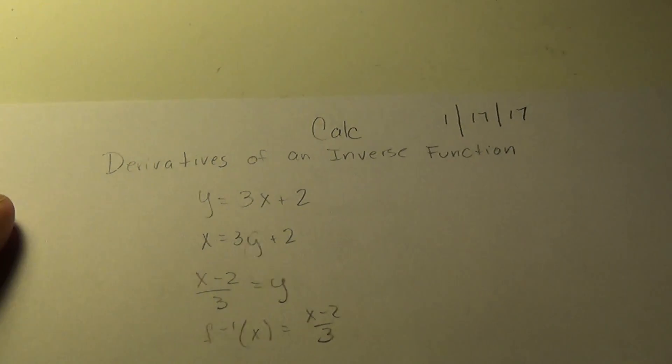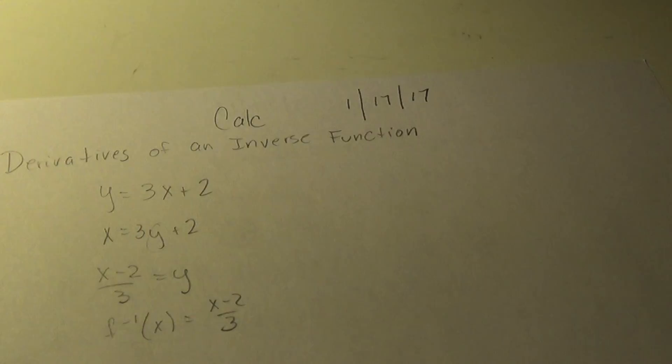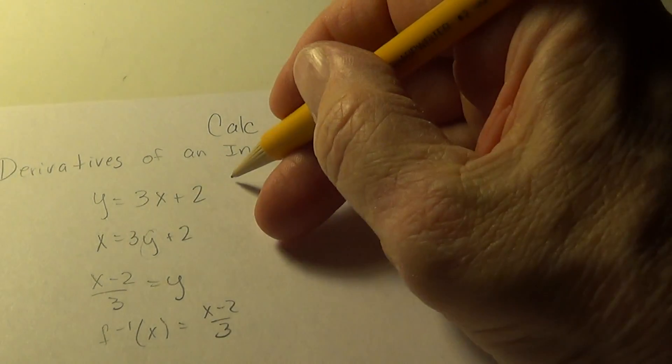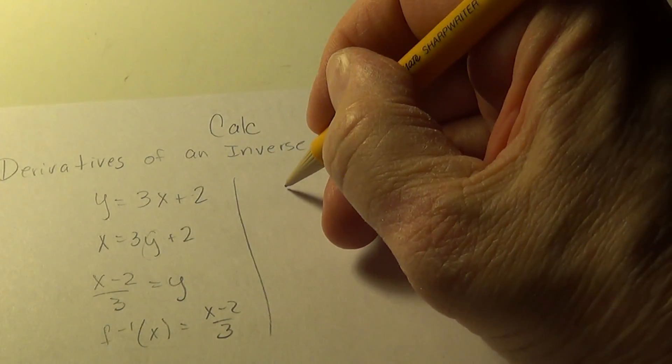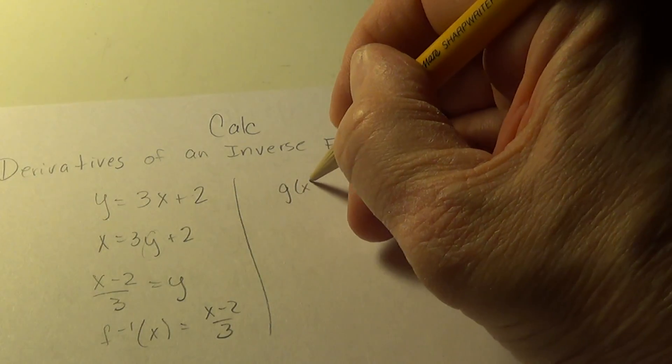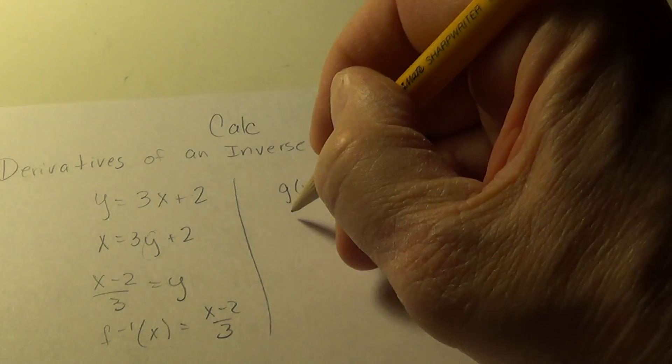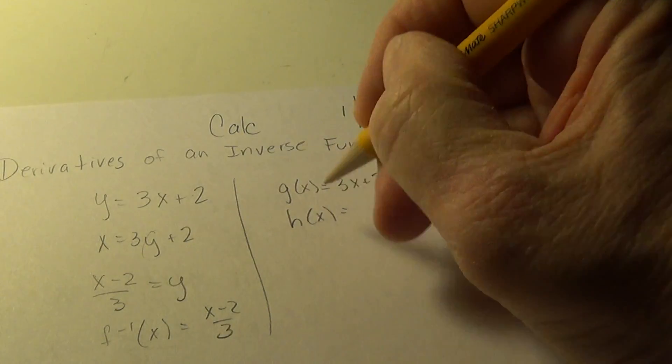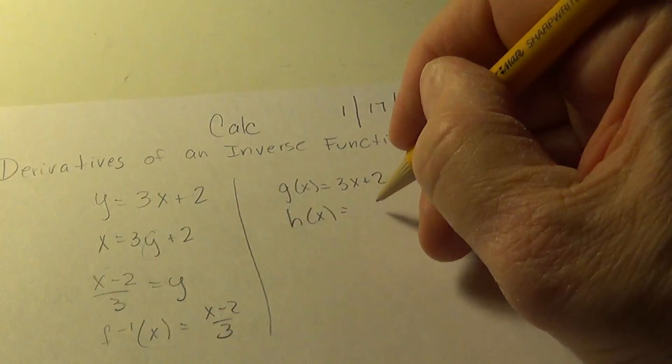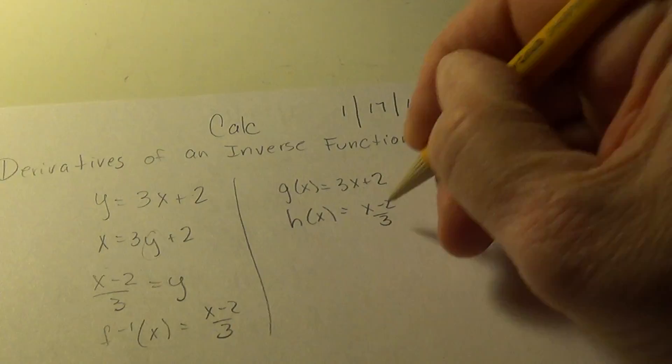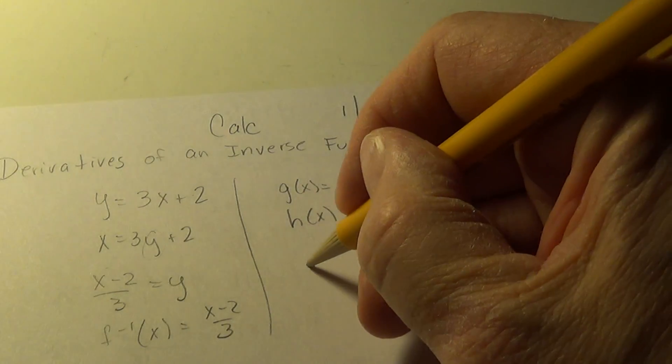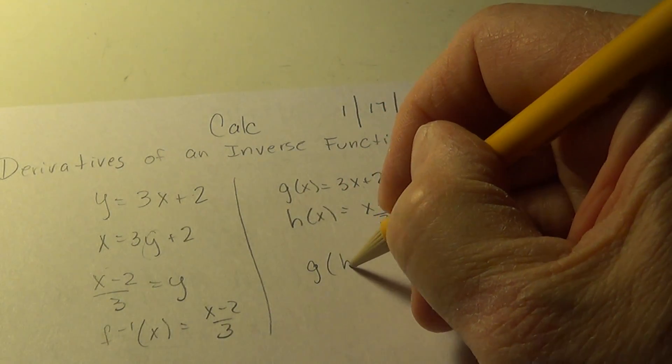And we know it was the inverse if it composed both ways to give us x. So if I call this, say, g of x equals 3x plus 2, and say h of x is x minus 2 over 3, we learned that if you compose g of x, h of x, and you get x,